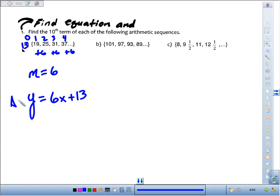So here's the equation, and then we want to find the tenth term. All we have to do is plug 10 in. So we take y, the term is going to be 6 times the tenth term, plus 13, 60 plus 13, we're looking at 73.